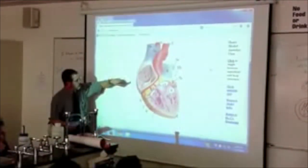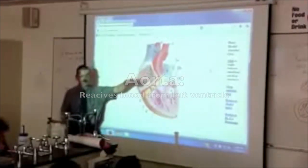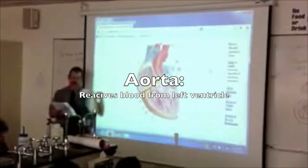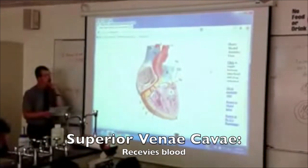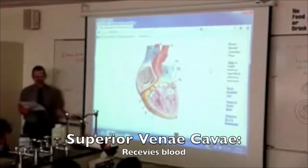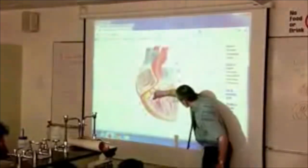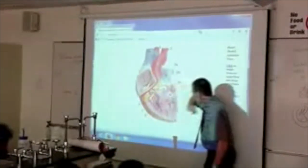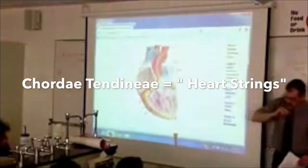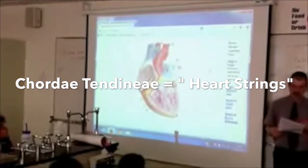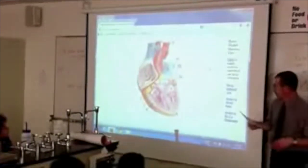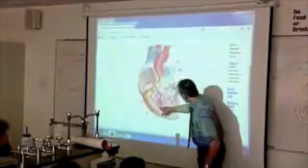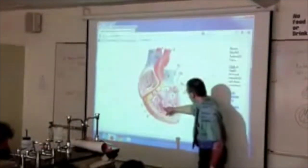Number seven is the aorta. Number one — Vena Cava, or superior vena cava. These little long stringy things mentioned in lecture — chordae tendineae. Literally, heart strings. The trick is, if you look where I is pointing, that's where the cords attach to your heart.